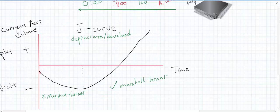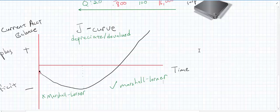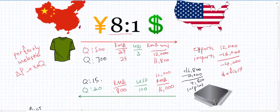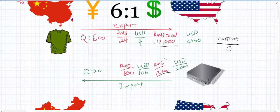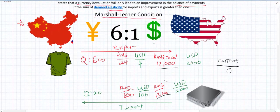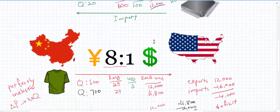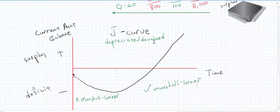Both the Marshall Lerner condition and the J-curve are very useful concepts to explain when evaluating the effects of currency changes on the current account balance. These might show up in multiple choice questions or writing questions — asking whether it is always of benefit to a country to depreciate its currency. Hopefully this video makes it easier to review; you can replay parts you don't fully understand and always ask questions.